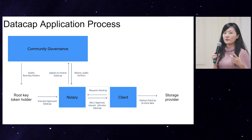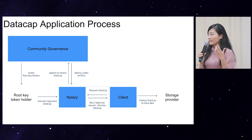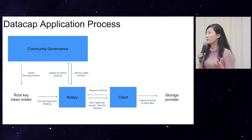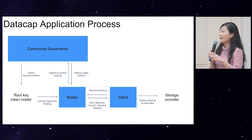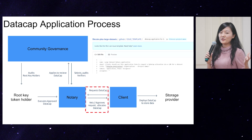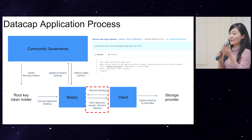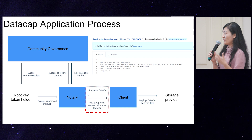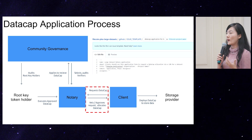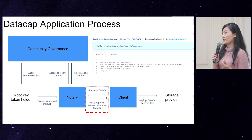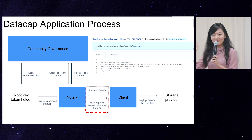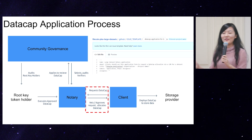Each client, if you want to get your data onboarded on the network — particularly large amounts — you need to show your credibility. Right now, the way to show your credibility is to apply for data cap on GitHub. As a client, I have to fill out a GitHub markdown format with 16 questions. If I'm not very technical, I might run into formatting issues or just give up. That's why we need a major revamp.